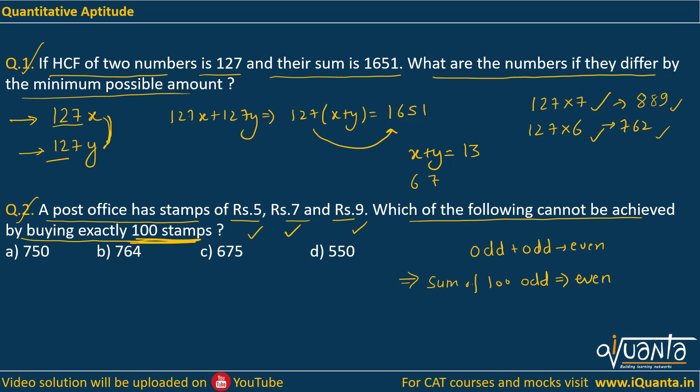So if the sum of 100 odd numbers has to be even, this option C here, it is odd, 675. So this is the only sum that is not possible if we buy 100 stamps of rupees 5, 7, 9. The number of these stamps could be different. So here we directly have to go through the options. All other sums can be achieved because they are even numbers, and sum of 100 odds will be even. But in no case will it be odd. So C will be the correct answer over here. This sum can never be achieved.